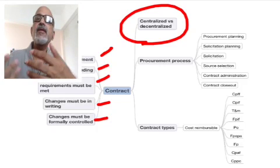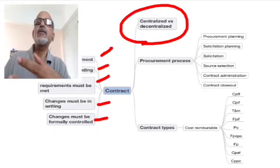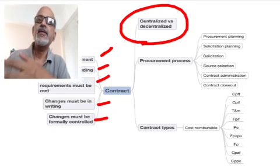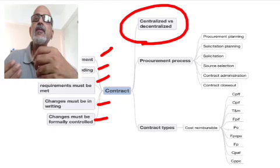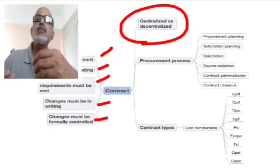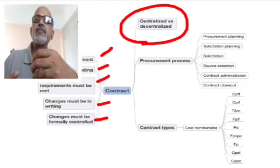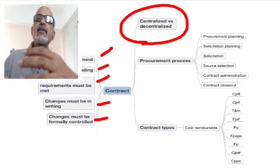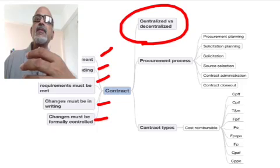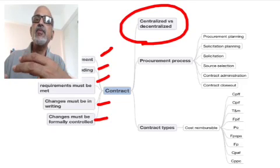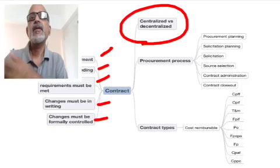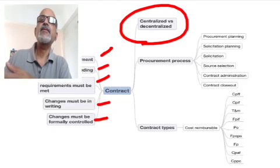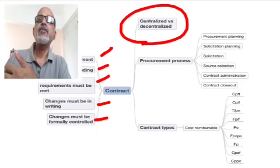If you have a centralized contracting department, the contracting personnel have a career path, meaning you can attract more talent. In decentralized contracting, the personnel may report into the project manager. Since the project itself is temporary, at the end of the project the contracting personnel may be sitting on the bench with no career path, making it harder to attract talent. Also, centralized contracting gives better negotiating leverage with suppliers, whereas decentralized contracting can lose that leverage.